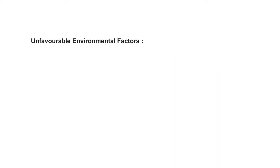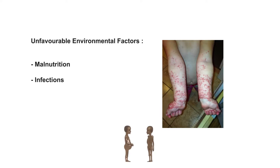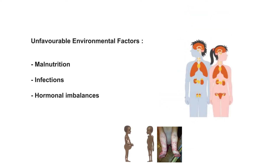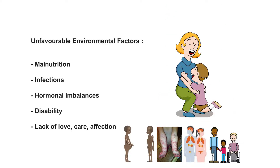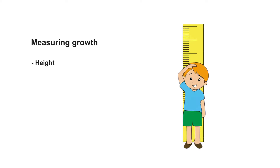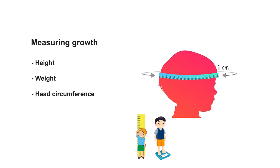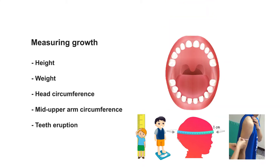Unfavorable environmental factors include malnutrition, infections, hormonal imbalances, disability, lack of love, care and affection, and improper play behavior. As growth is a quantitative measure, it is measured using height, weight, head circumference, mid-upper arm circumference, and teeth eruption in a child.